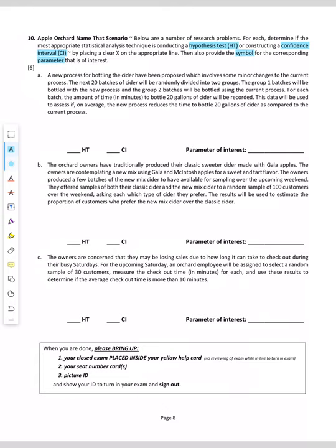So let's take a look at our background. A new process for bottling cider has been proposed and involves some minor changes to the current process. The next 20 batches of cider will be randomly divided into two groups. Group 1 will have the new process. Group 2 will use the current process. And what are we going to record for each of these? The amount of time in minutes it takes to bottle 20 gallons of cider.